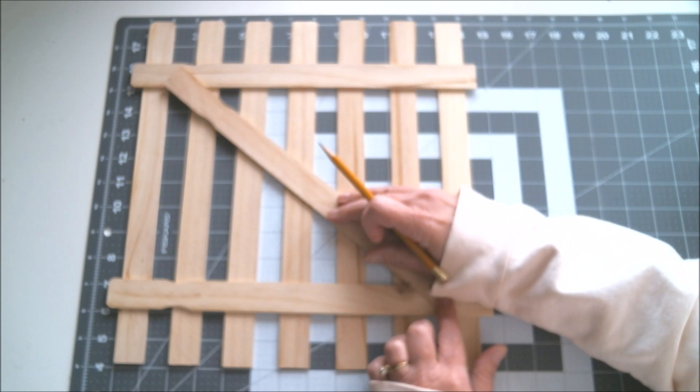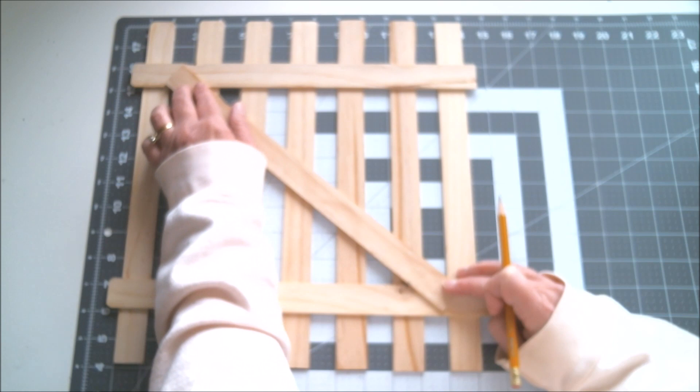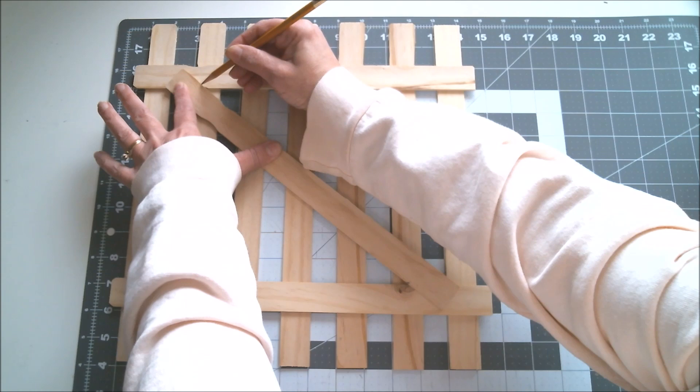We're going to do the same thing at the other end. We're going to get the bottom corner lined up right with this piece of wood right there. Then I'm going to come over here and I'm going to do the same thing right where this piece of wood comes in. I'm going to mark it right there on that piece of wood.